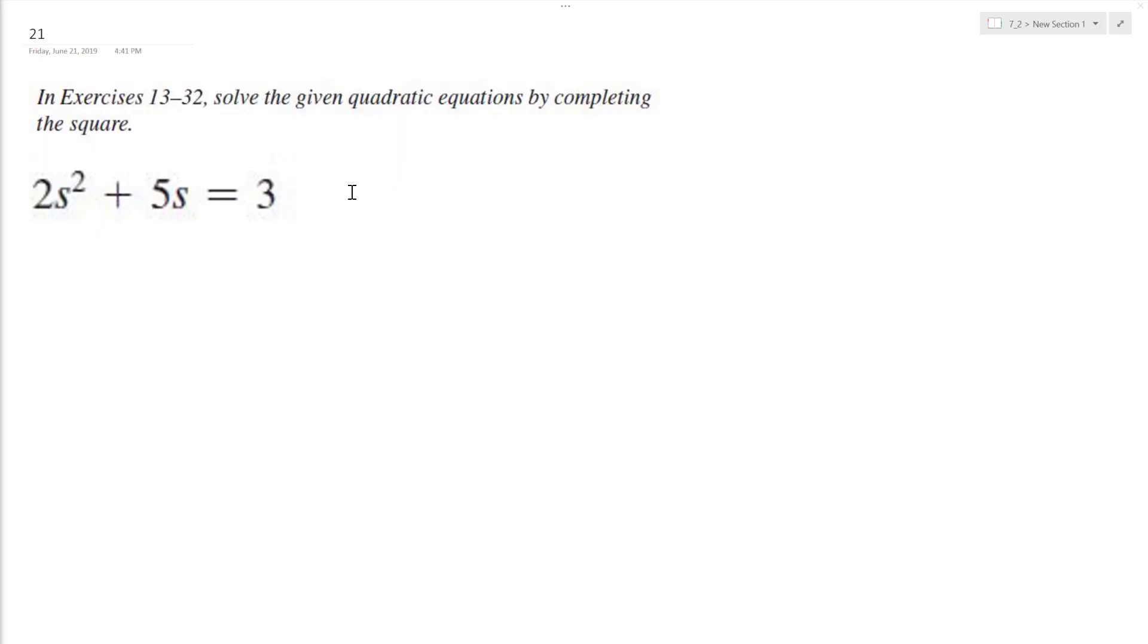Let's solve the following problem by completing the square. First thing we'll do is divide through by two so we get just a one for the coefficient of s squared. So we have s squared plus 5 halves is equal to 3 halves.